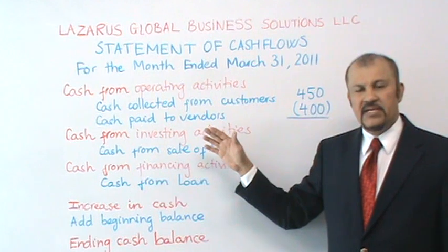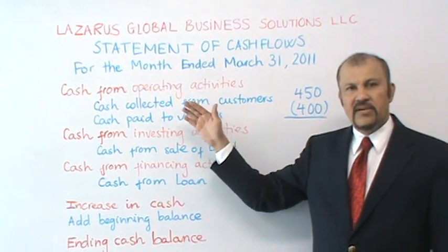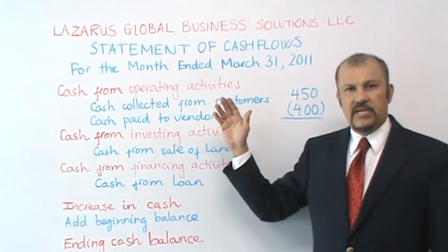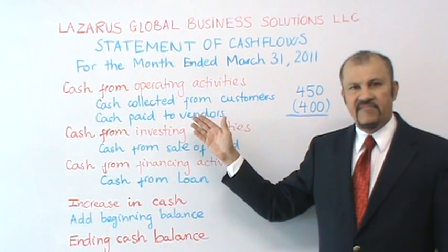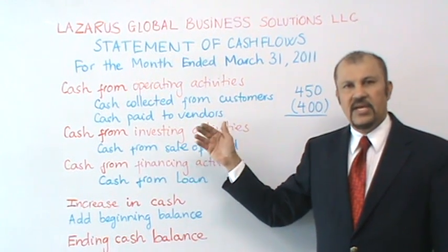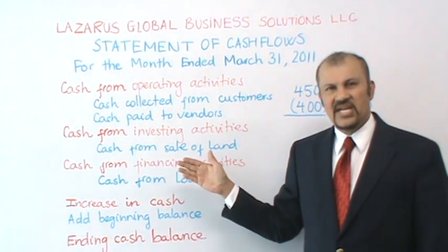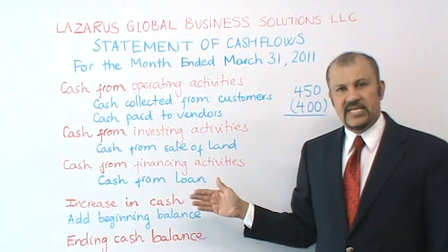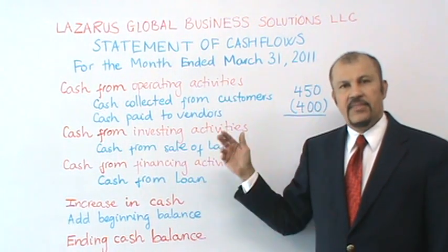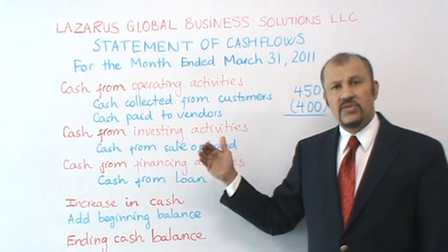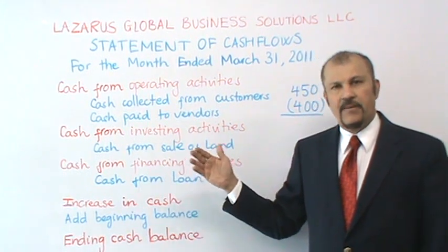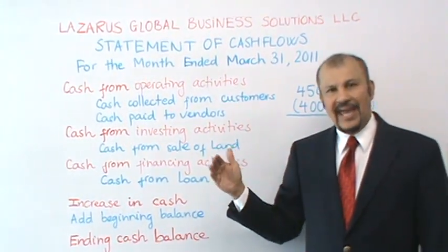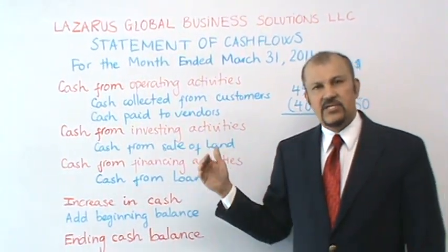The cash flow statement is broken out into three broad sections. The first one is the operating activity section, then you have the investing activity section, and finally you have the financing activity section. There are also two different methods for preparing the cash flow statement: the direct method and the indirect method.